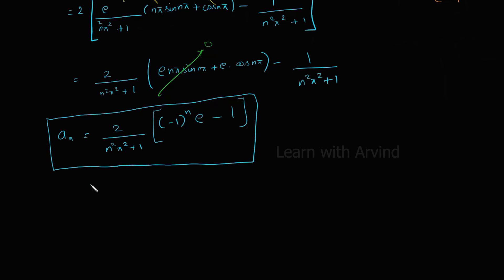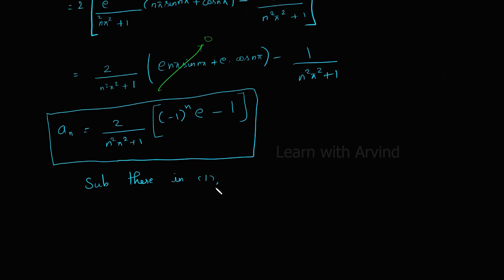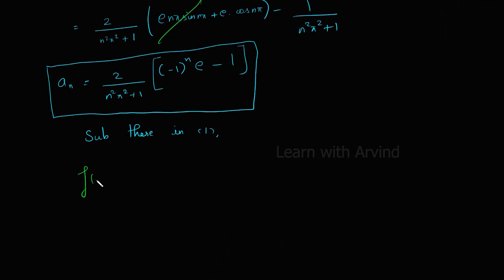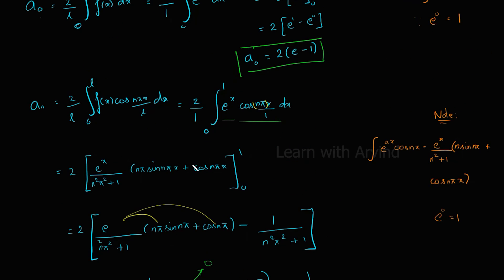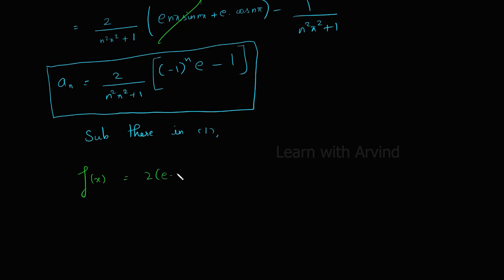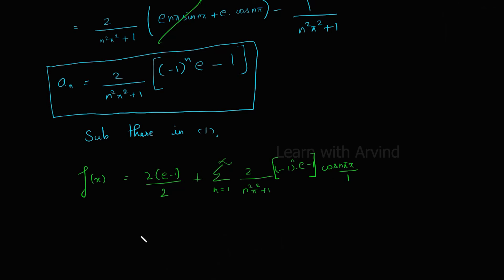Substituting the values of a₀ and aₙ into equation 1, we get: f(x) equals 2(e minus 1) divided by 2 plus summation n equals 1 to infinity of 2 by (n²π² + 1) times ((minus 1)ⁿ e minus 1) times cos(nπx). This is the half range cosine series for the function f(x) equals eˣ.